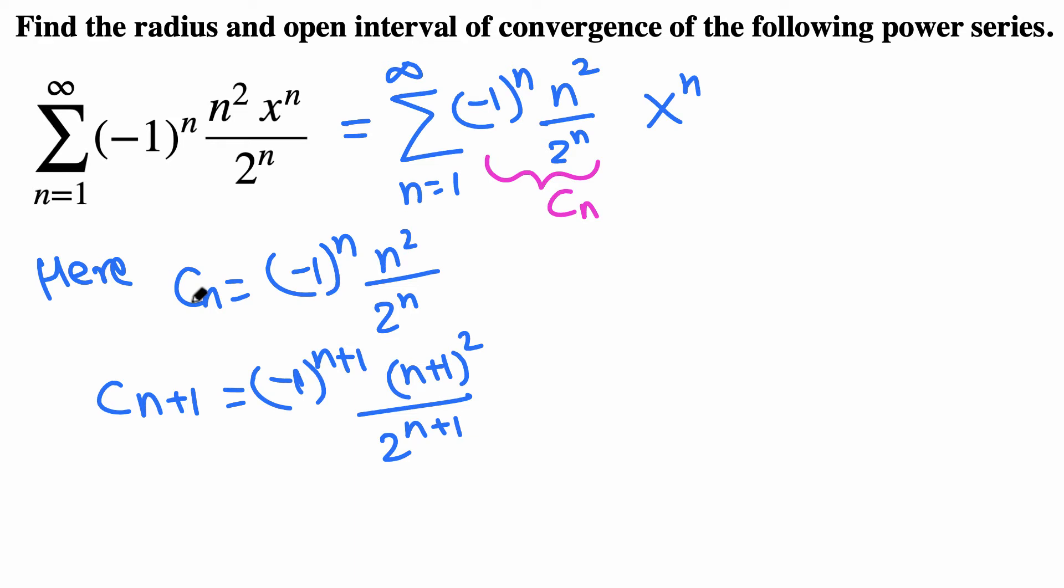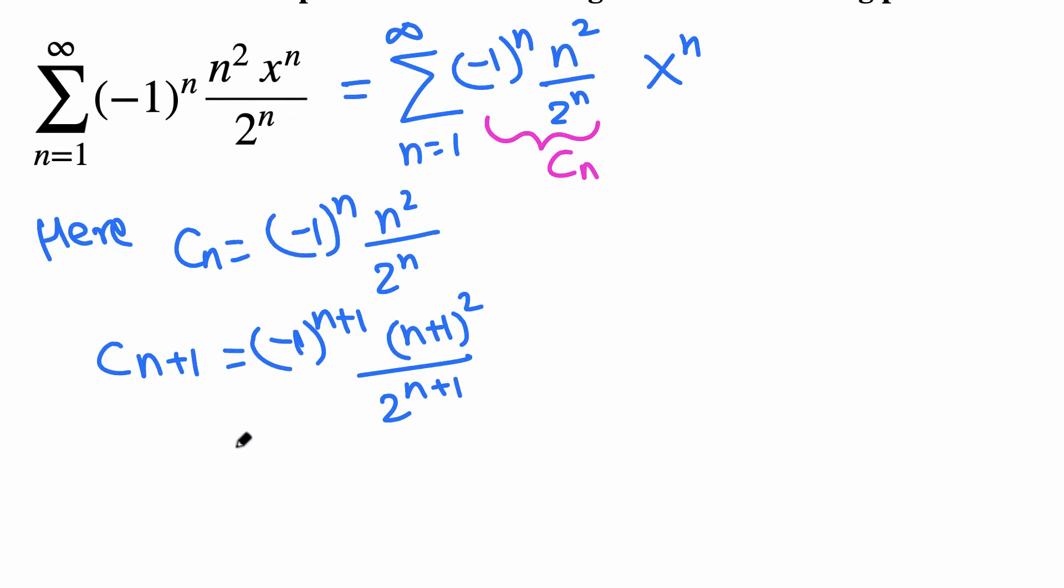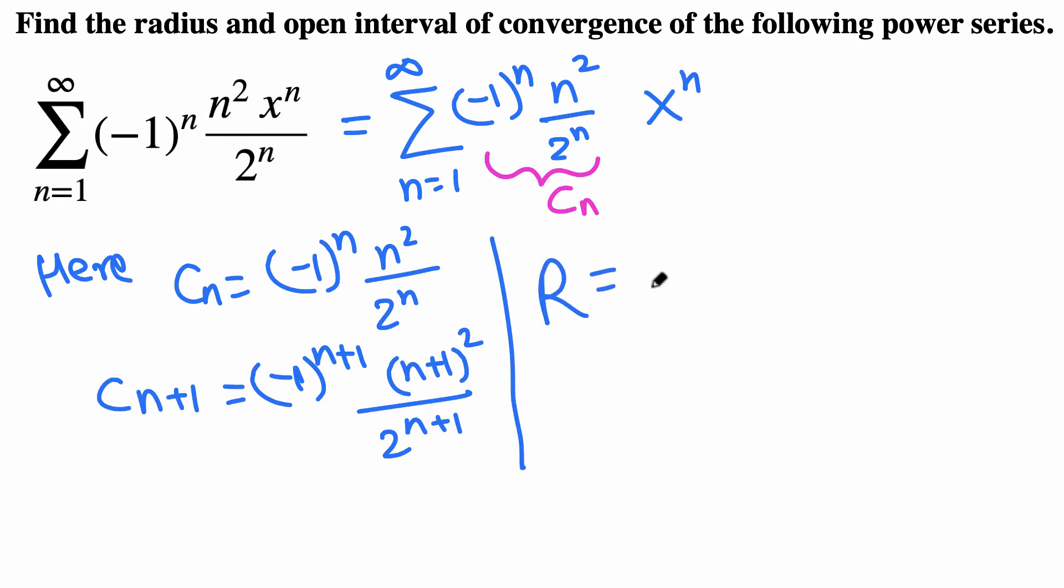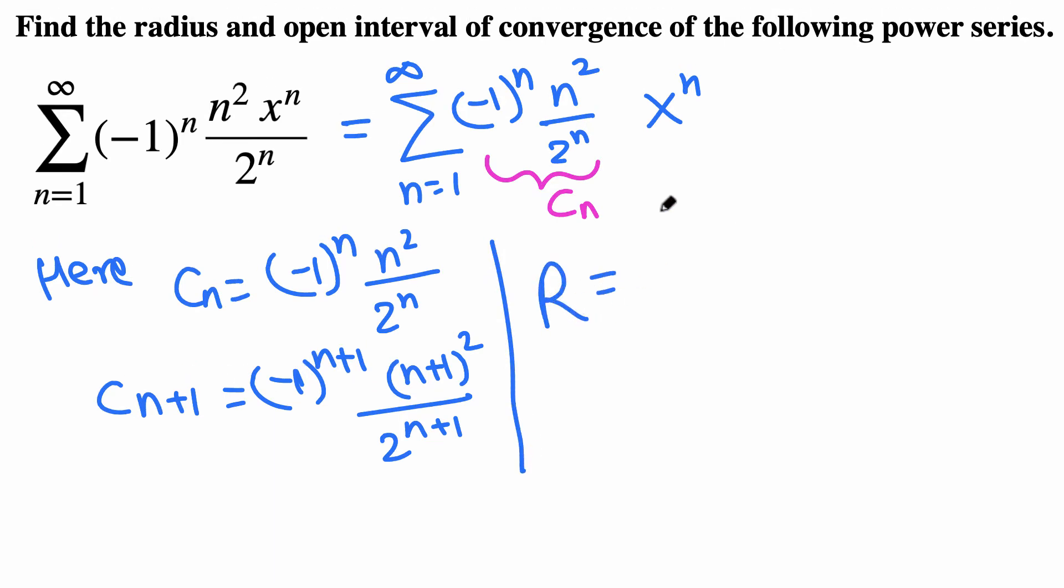Now we got both constants cn and cn plus 1. By an application of the ratio test, the radius of convergence is given by the limit as n goes to infinity of cn over cn plus 1 absolute value.